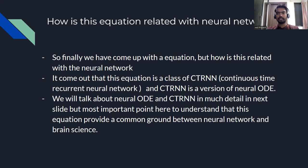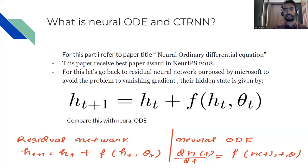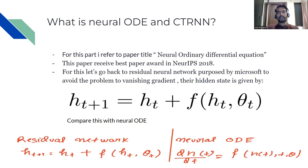Now let's talk about Neural ODE and CTRNN in more detail. You can refer to the paper 'Neural Ordinary Differential Equations,' which received the Best Paper Award at NeurIPS 2018. To understand Neural ODE, let's go back to the residual neural network, proposed by Microsoft to avoid the problem of vanishing gradients. In a very deep network, they faced the problem of vanishing gradients, so instead of just taking the previous state they also include a function of the last state.